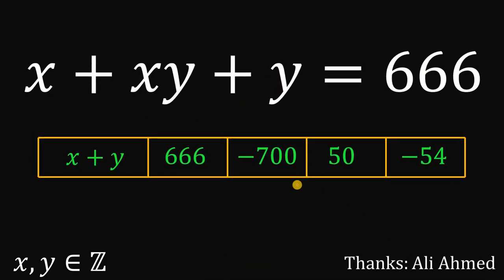Therefore, our answer to this question given by Sir Ali. Solve for the value of x plus y given this equation x plus xy plus y equals 666. And our answer is 666, negative 700, 50, or negative 54. And as always...